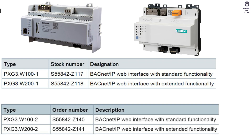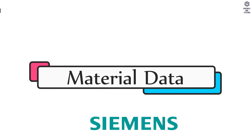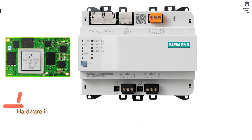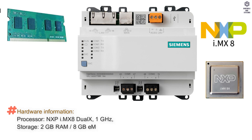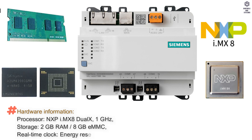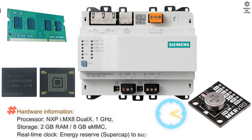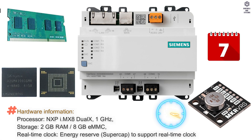Type summary: there are two types and four models of BACnet interface device available. Material data and hardware information: processor is NXP i.MX8 Dual X at 1 GHz, storage is 2 GB RAM and 8 GB eMMC, real time clock with energy reserve to support real time clock is